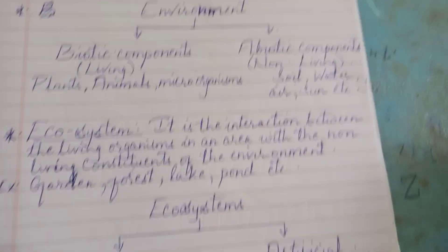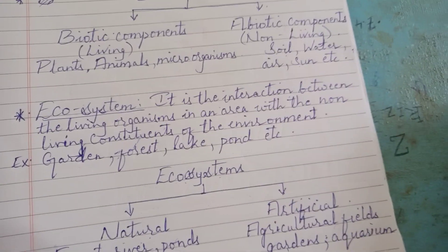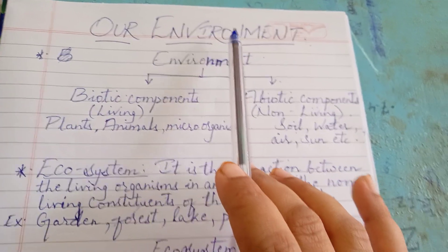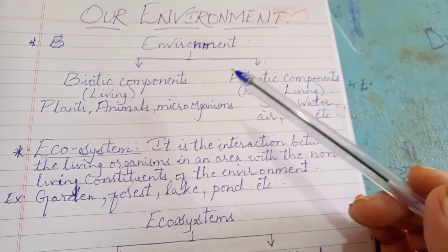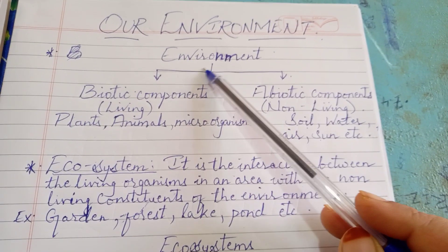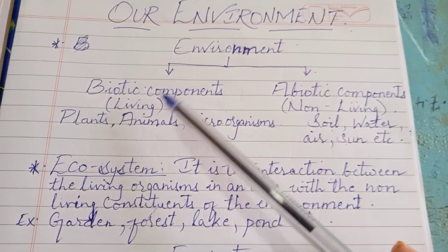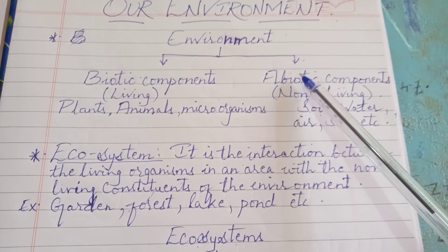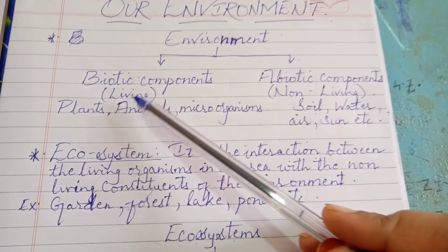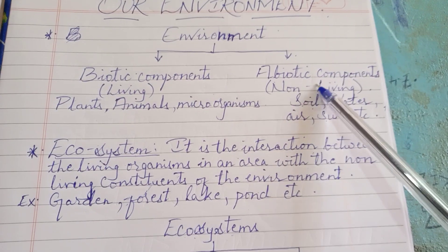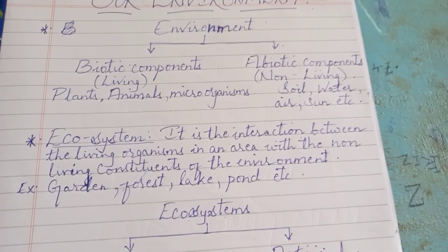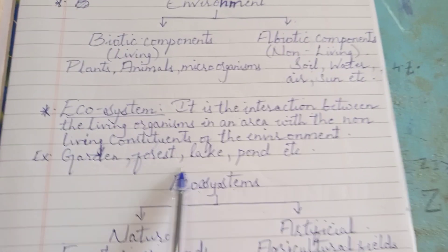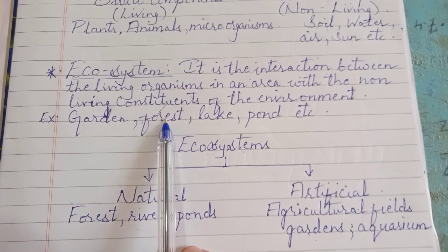Asalaam alaikum students. In the previous video we started the chapter 'Our Environment' and discussed some points. We saw that our environment consists of two types of components: biotic components and abiotic components. Biotic components are living organisms and abiotic are non-living organisms. We saw examples of those as well.